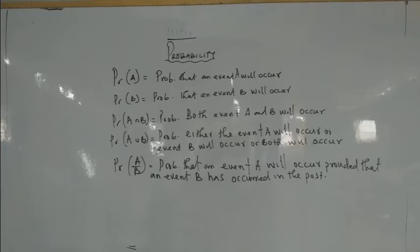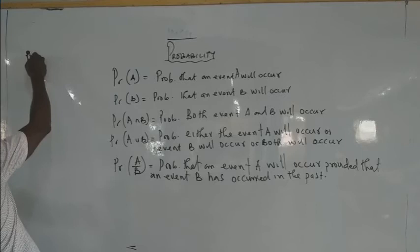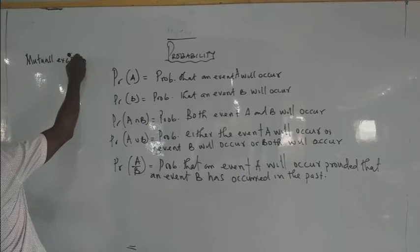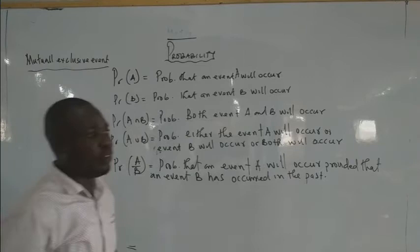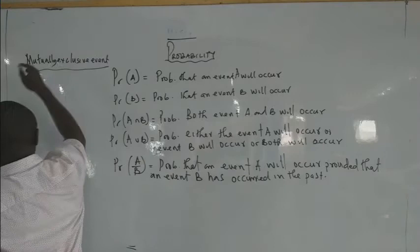After that, you need to understand the subtopics under probability. The first subtopic is mutually exclusive events. What is a mutually exclusive event? These are events that cannot occur simultaneously — they cannot occur at the same time.